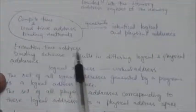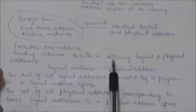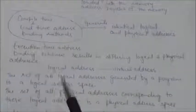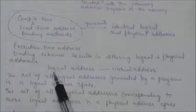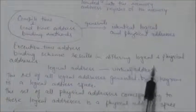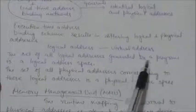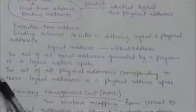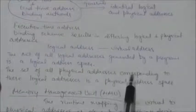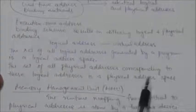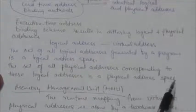Execution time address binding scheme results in differing logical and physical addresses. In this case, the logical address is referred to as a virtual address. The set of all logical addresses generated by a program is a logical address space, and the set of all physical addresses corresponding to these logical addresses is a physical address space.